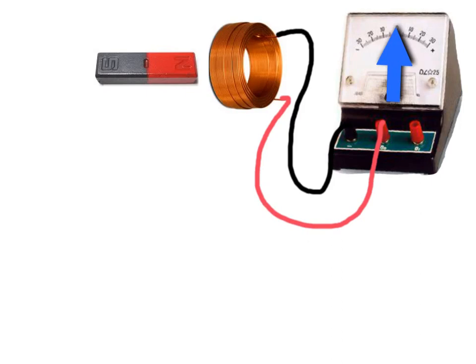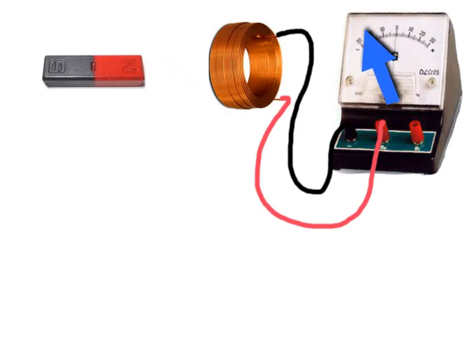The upshot of that is that when you push the magnet in, the galvanometer will deflect in one direction. With the magnet still in any location, the galvanometer goes back to zero. When you pull the magnet away again, we should find that we get the galvanometer deflecting in the opposite direction.